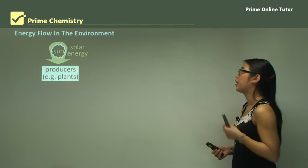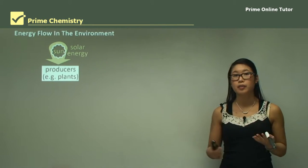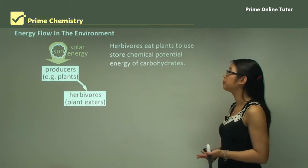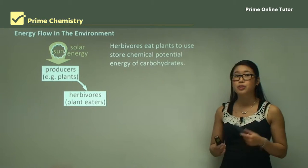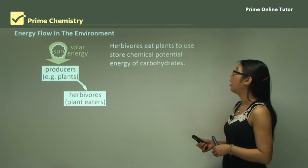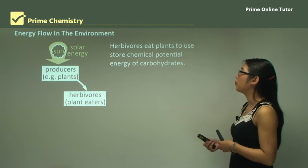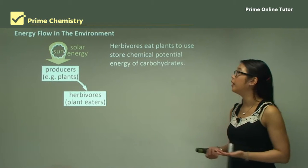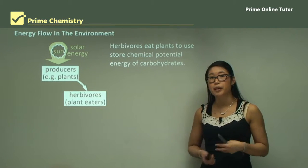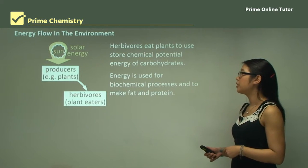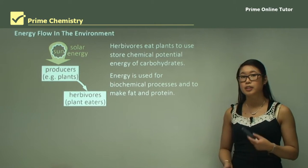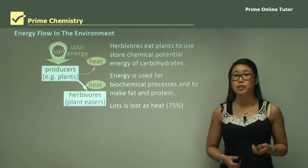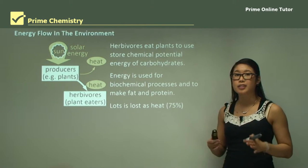When we look at energy flow in the environment, first we have the sun radiating solar energy and it's used by producers such as plants. Herbivores then eat the plants to use the stored chemical energy in glucose, using all the carbohydrates and sugars to fuel themselves through chemical processes. Energy is used for biochemical processes such as making fat and protein, and a lot of the energy — about 75% — is lost as heat.